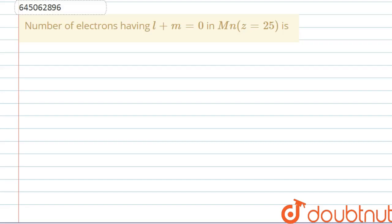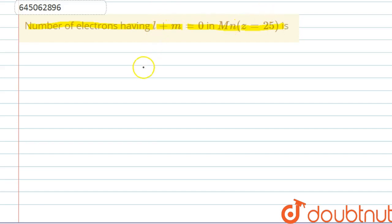Hello everyone, let's start this question. In this question we have to find the number of electrons having L plus M value equal to zero in Mn, that is with atomic number 25. Firstly we need to know what L is — L is basically the azimuthal quantum number and M is the magnetic quantum number.